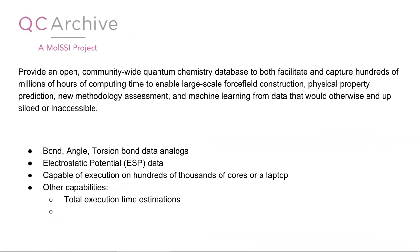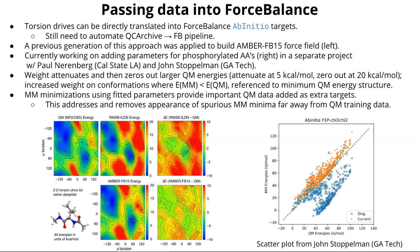I think this is going to be a fantastic resource for the community and especially for enabling machine learning. Where is the data going to sit? Currently at TACC — the Texas Advanced Computing Center — and it should be open for anyone to pull from that central location. Once that data is retrieved, it goes into force balance for parameterization. The final result of a torsion drive is a set of ab initio single-point energies and gradients, which can be directly translated into the ab initio target type so that force balance can fit force field parameters to reproduce those energies and optionally gradients.